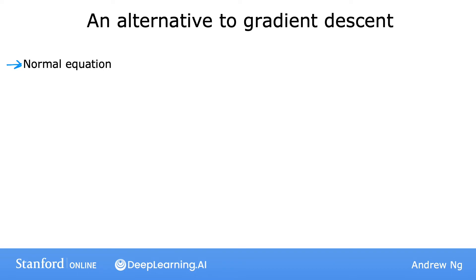Whereas it turns out gradient descent is a great method for minimizing the cost function J to find w and b, there is one other algorithm that works only for linear regression and pretty much none of the other algorithms you see in this specialization for solving for w and b. And this other method does not need an iterative gradient descent algorithm.